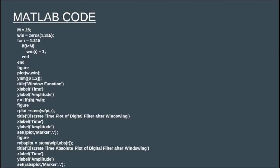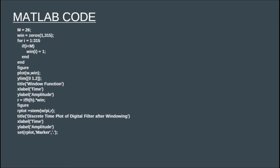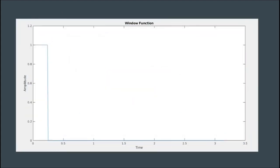In Step 4, we define the window function. We set M = 26. Although the question asks for a 25-tap filter, we use M = 26 because MATLAB indexing starts from 1, not 0. We then write win = zeros(1, 315), which creates a row vector of length 315 filled with zeros. In the next for loop, for the first 25 values of win, we change the value from 0 to 1 and leave all others as 0. This gives us the window function. Plotting it shows amplitude 1 for the first 25 samples, and 0 for all others.